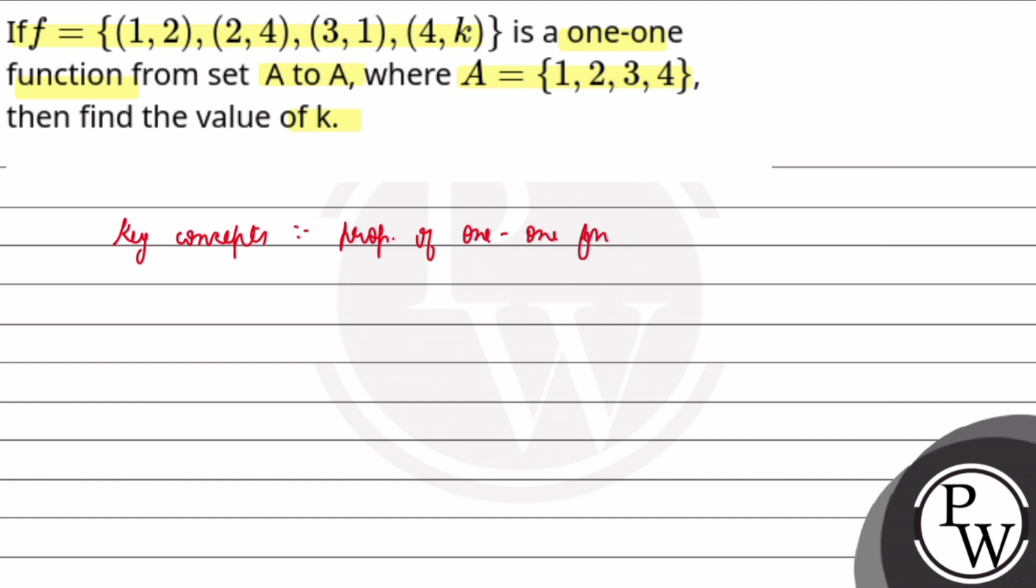A one-to-one function is a kind of function in which each element is uniquely mapped to its element in the co-domain. So how can we understand this? Let's see.